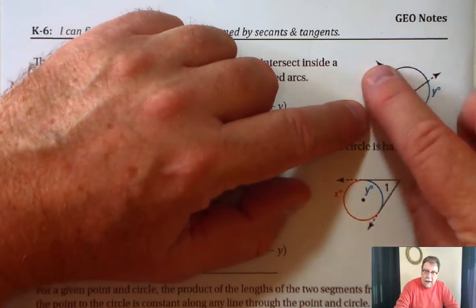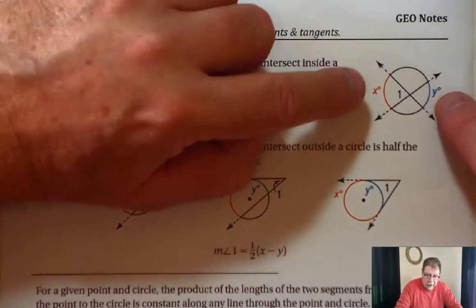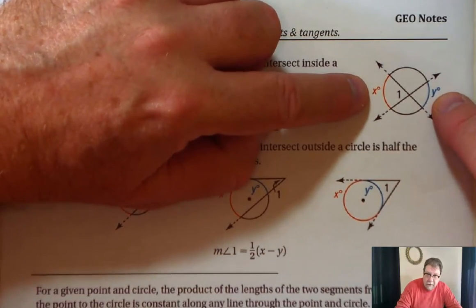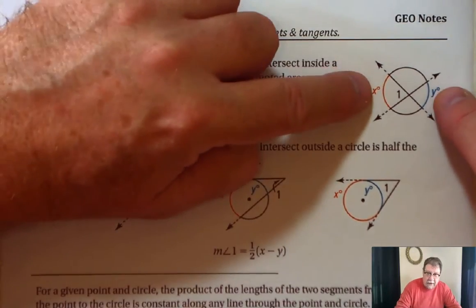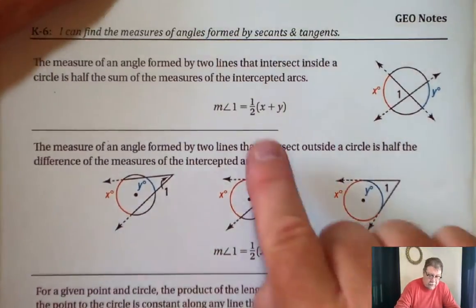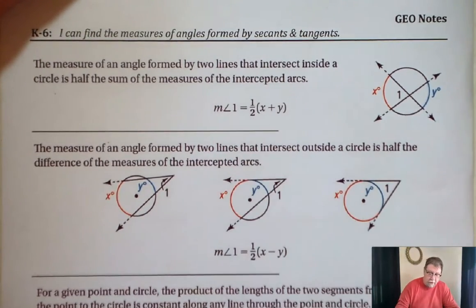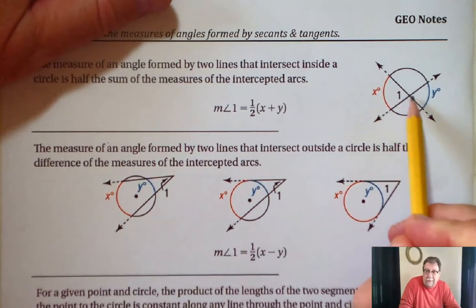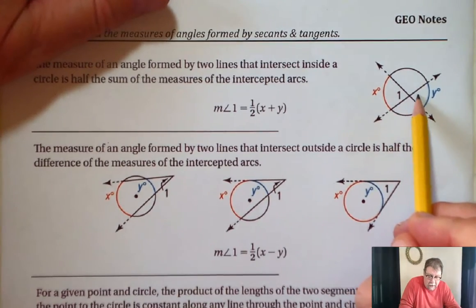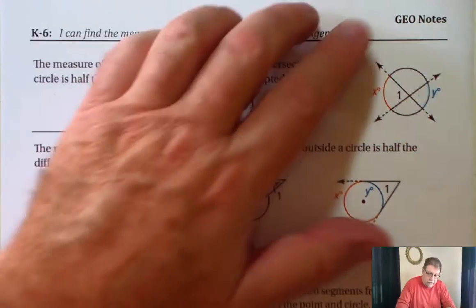So I've got two lines that intersect somewhere in a circle, and I know the two arcs. All I need to do is add the two arcs together, take half the answer. That tells me the measure of angle one. And by the way, both of these angles are the same because they're vertical angles.